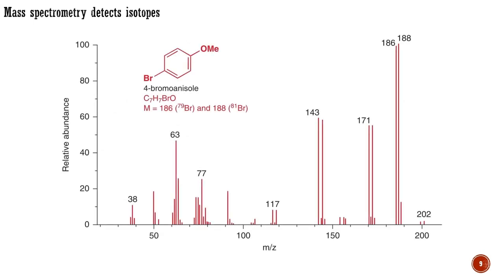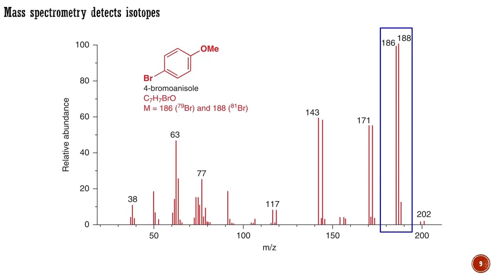Bromine, on the other hand, is an almost 1-to-1 mixture of bromine-79 and bromine-81, hence the average mass of bromine is 80. Since mass spectrometry weighs individual molecules, there is no averaging — instead it detects the true weight of each molecule, whatever isotope it contains. For example, the molecular ion in the electron impact mass spectrum of an aryl bromide has two peaks at 186 and 188 of roughly equal intensity. Having two molecular ions of equal intensity separated by two mass units is indicative of bromine in a molecule.